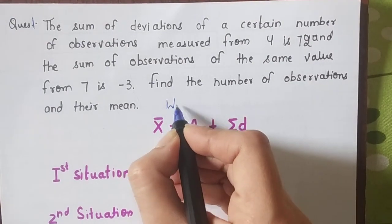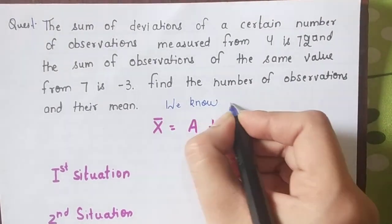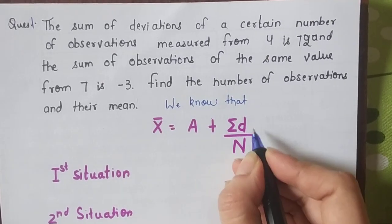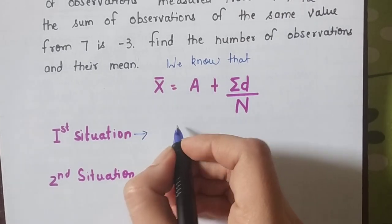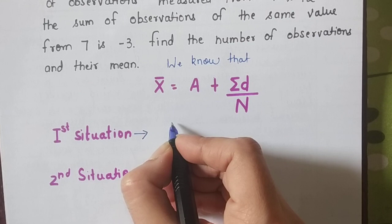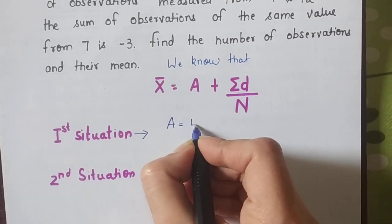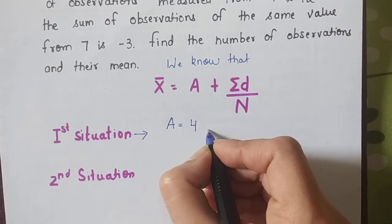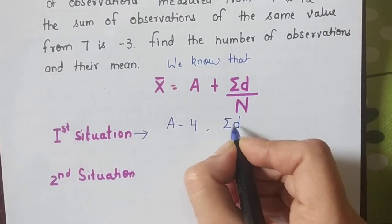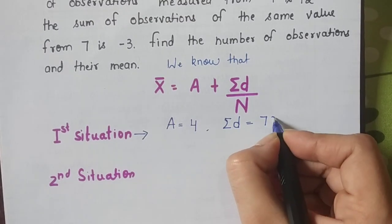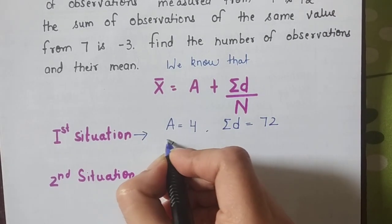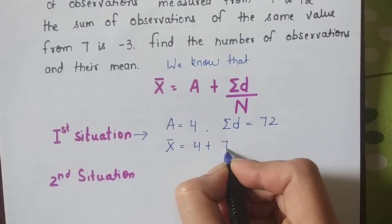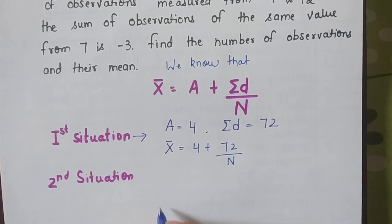As I already know that the formula of the mean is x̄ = A + Σd/n. So I have basically two situations in this question. The first situation is that your assumed mean is 4, and the total of deviations is 72. So if I put this first situation in this equation, the equation becomes mean = 4 + 72/n, where n I don't know.